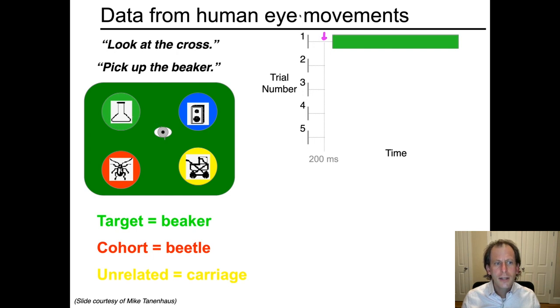On a second trial, they might alternatively take a longer time and then execute the saccade to the beaker. So there would be a later time when the eye hits one of the four areas of interest and that area of interest would be the beaker. Once again, on a third trial, they might, for example, look at the beetle first and then look at the beaker later on. So the time course might look like this: first they're in the red area of interest, the cohort area, then the green target area. They might have all sorts of different behaviors.